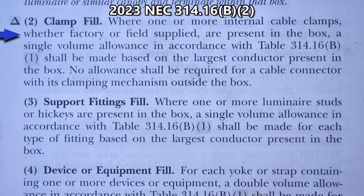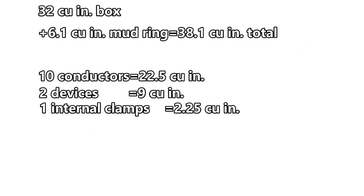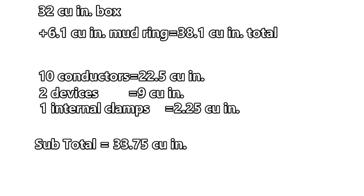Here we are at NEC 314.16B2, clamp fill. Where one or more internal cable clamps, whether factory or field supplied, are present in the box, a single volume allowance in accordance with table 314.16B1 shall be made based on the largest conductor present in the box. No allowance shall be required for a cable connector with its clamping mechanism outside the box. So we'll add one volume allowance for the internal clamps, which is 2.25 cubic inches, giving us a subtotal of 33.75 cubic inches.